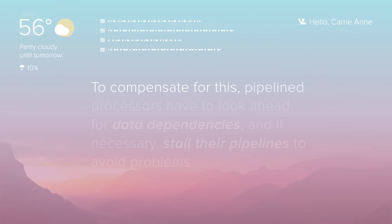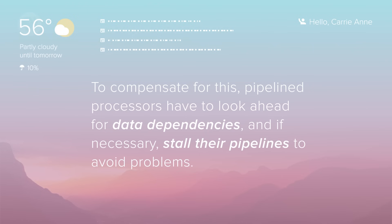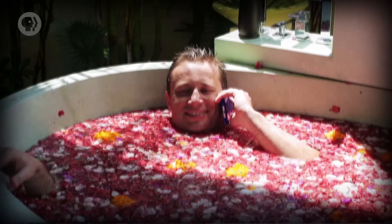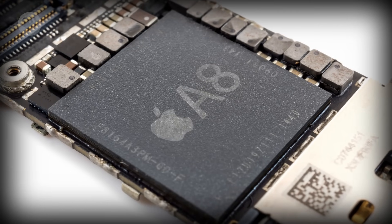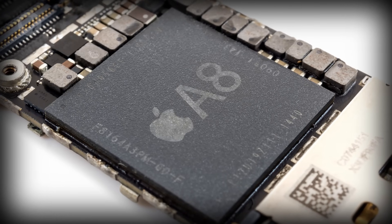But just like with caching, pipelining can lead to some tricky problems. A big hazard is a dependency in the instructions – for example, you might fetch something that the currently executing instruction is just about to modify, meaning you'll end up with the old value in the pipeline. To compensate, pipelined processors have to look ahead for data dependencies, and if necessary, stall their pipelines to avoid problems. High-end processors can dynamically reorder instructions with dependencies in order to minimize stalls and keep the pipeline moving, which is called out-of-order execution. Pipelining is tremendously effective, and almost all processors implement it today.